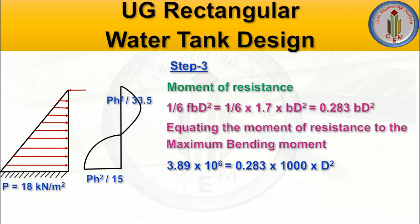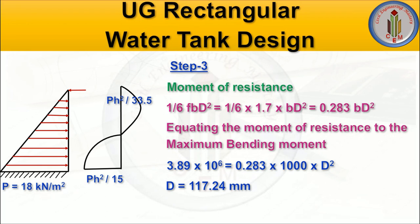To find the wall thickness, we equate the moment of resistance to the maximum bending moment of 3.89 kN·m = 3.89 × 10⁶ N·mm. So 0.283 × 1000 × d² = 3.89 × 10⁶, giving d = 117.24 mm. We therefore provide a wall thickness of 150 mm.